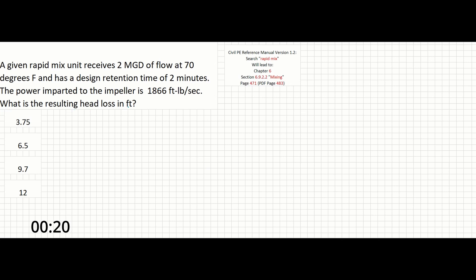The first thing we want to do in this problem is search for rapid mix. Searching for this in the reference manual will take us to chapter 6 section 6.9.2.2 to a section called mixing. There is an equation there for rapid mix and flocculator design that we can write out now. The equation is G equals P over mu times V all to the square root equals gamma times head loss over t times mu also to the square root.